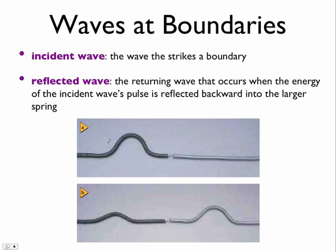The incident wave is the wave that is striking the boundary. You can tell that this wave is going here and it's about to hit the spring, and then the spring is going to continue the wave. This right here is the incident wave.